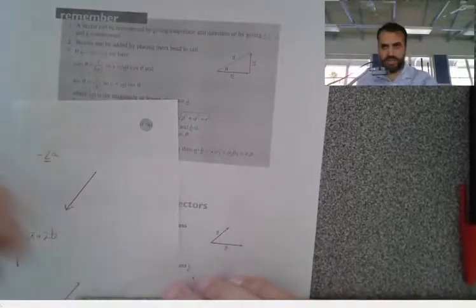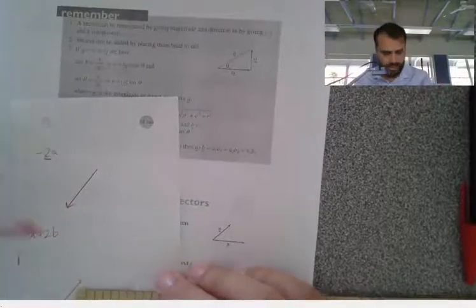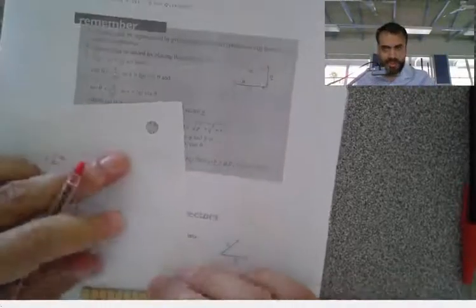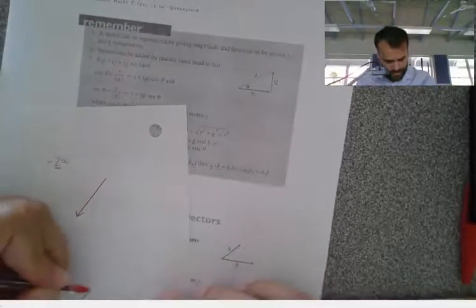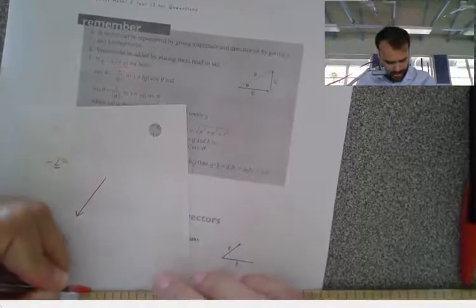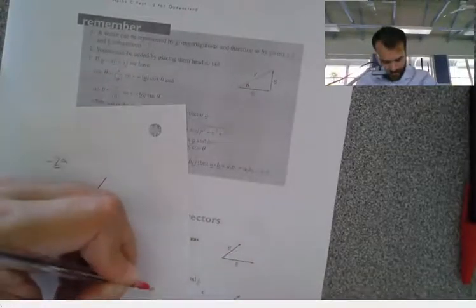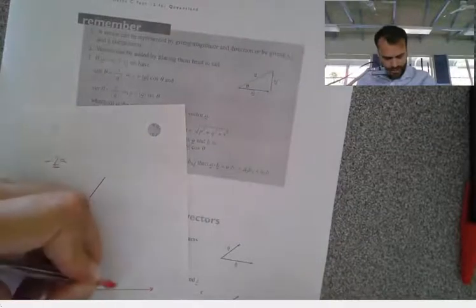Now, I attach that to the end of vector A. So we do tip to tail. So here's the tip. Tail here. So that's vector A, that's vector B.